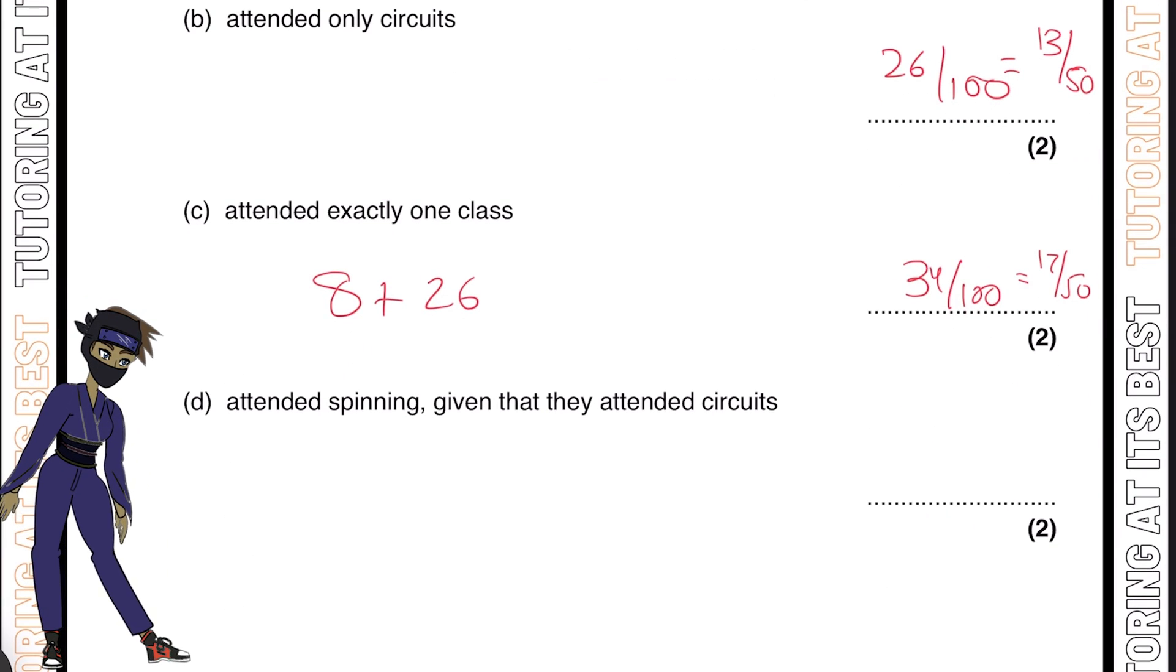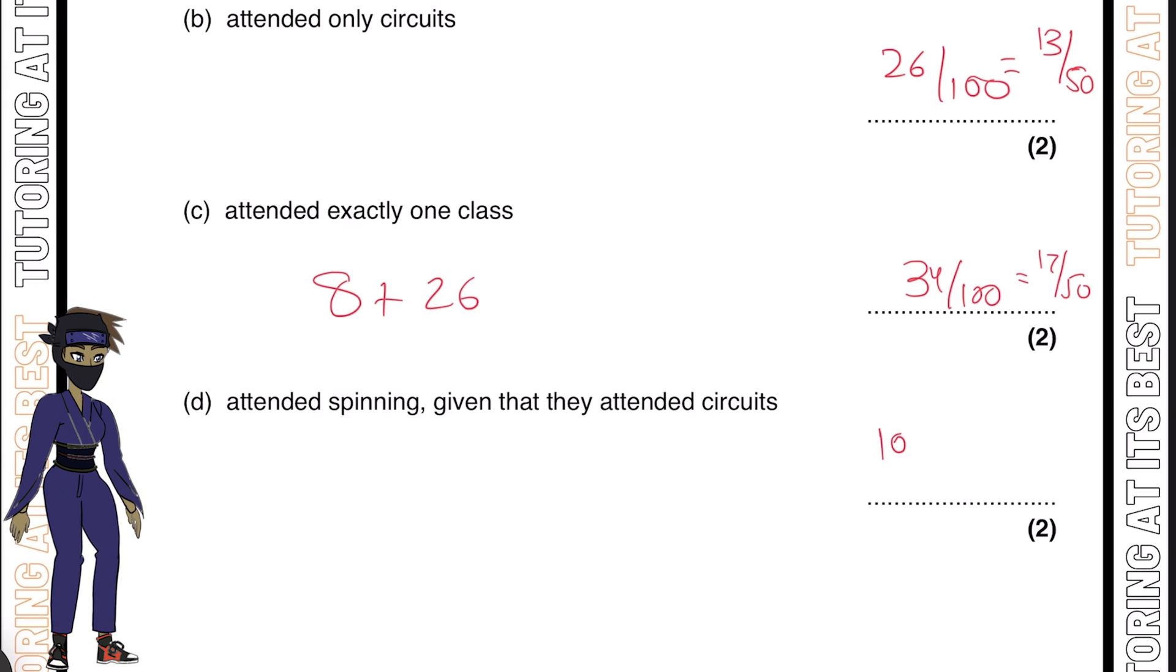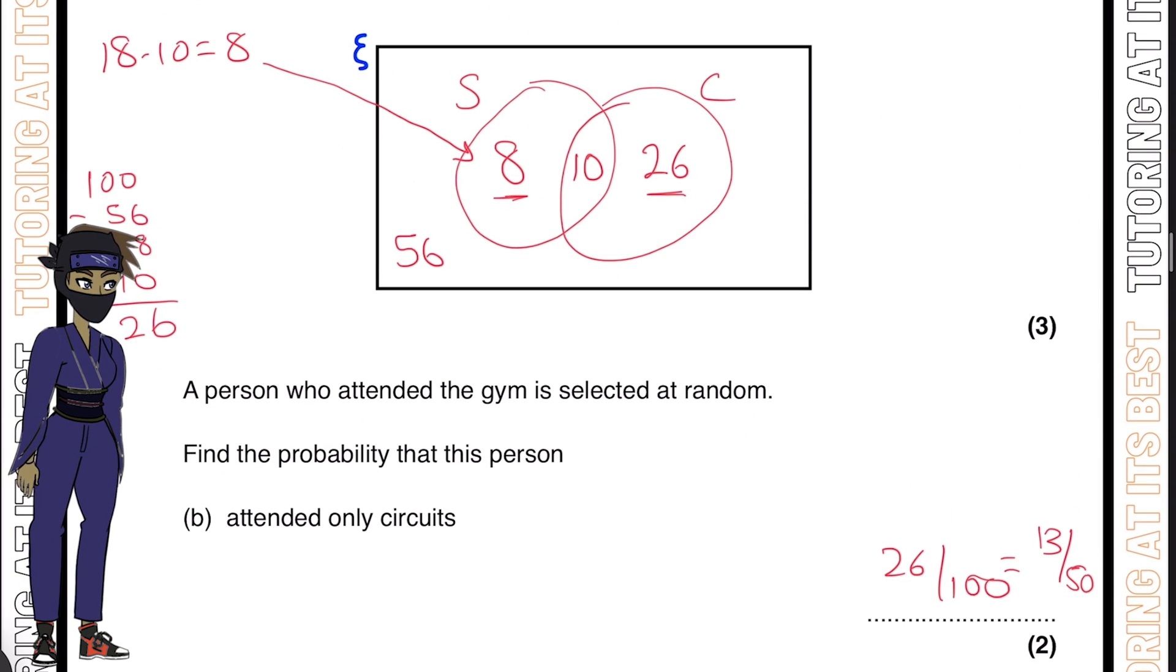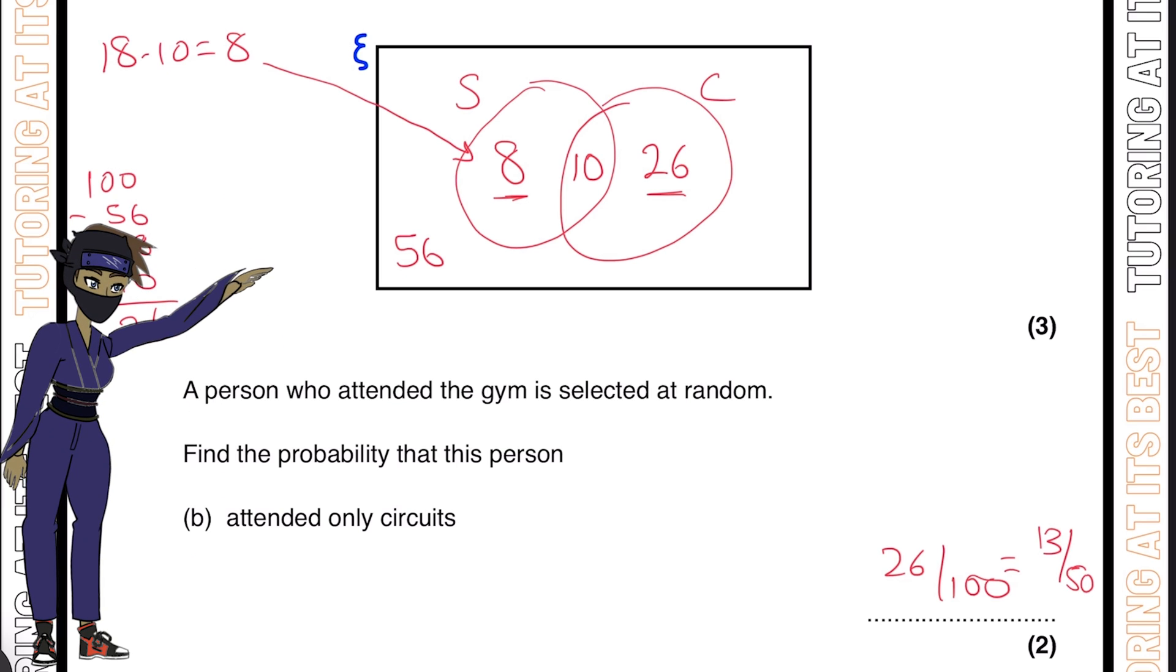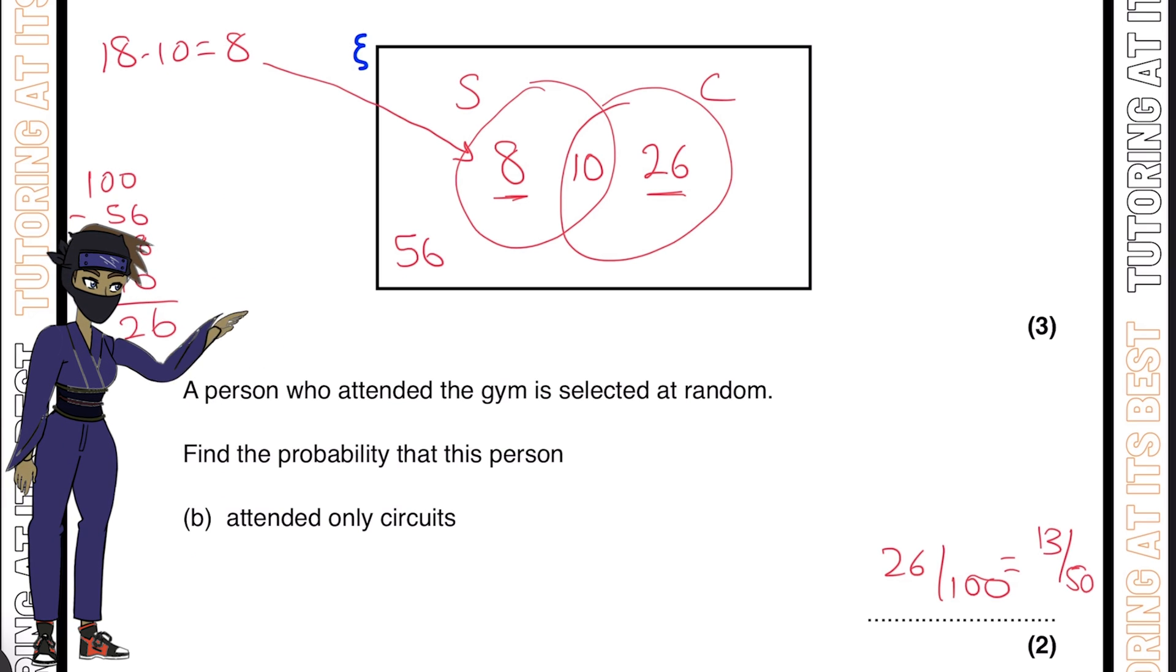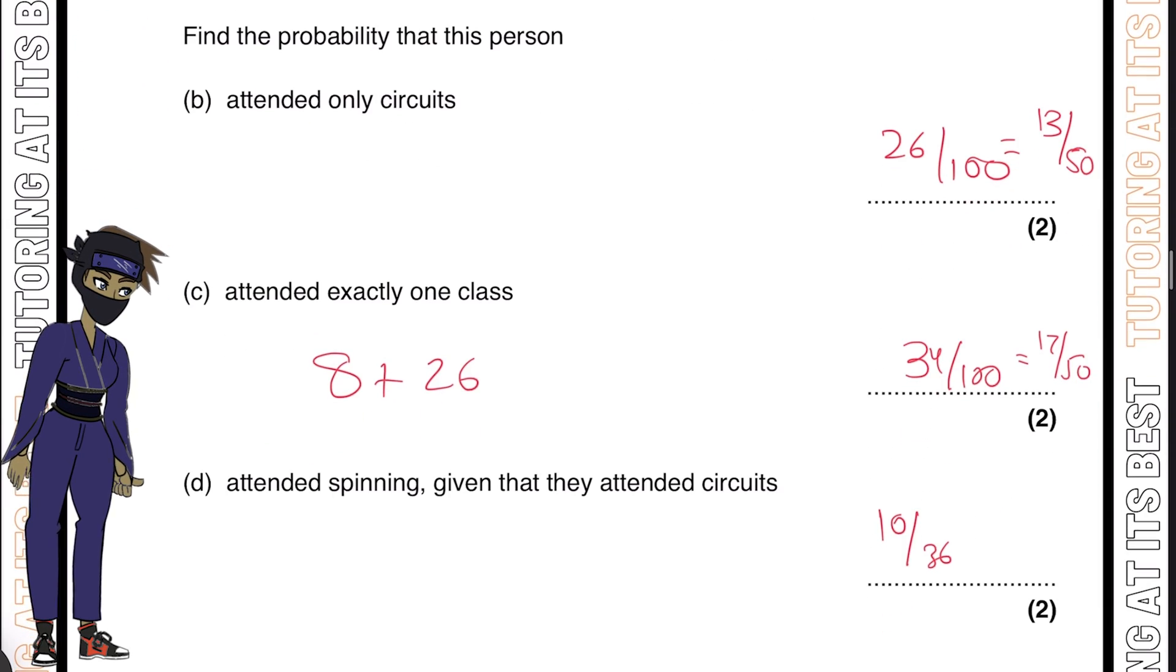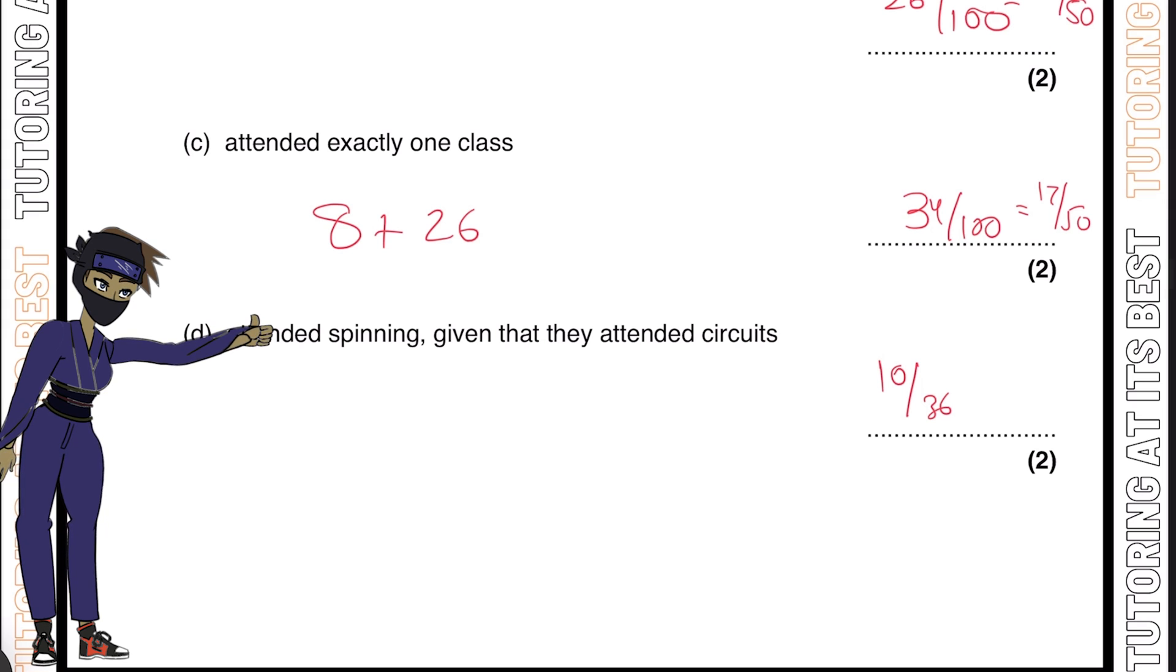For part D, attended the spinning given that they attended the circuits. We know that's going to be 10 over 36, because we had 10 in the middle who attended spinning and attended the circuits. That's 10 out of 36, making sure they also attended the circuits, which is 10 out of 26, giving us 36.